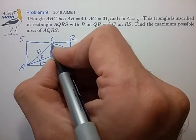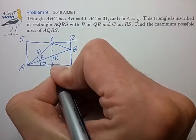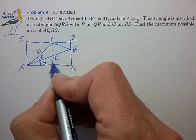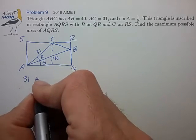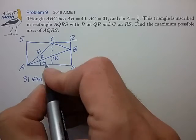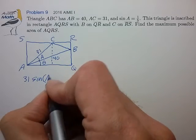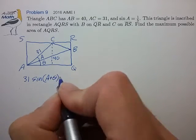And from that, we can quickly write out the area of the rectangle because we know the height. The height is given by 31 times the sine of the sum of these two angles, A plus theta.